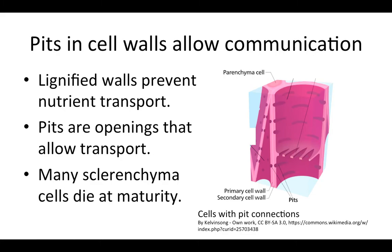There's a problem with sclerenchyma cells: they have these thick secondary cell walls, which is great for strength, but it also makes it very hard to transport materials from cell to cell. Transporting materials is important for allowing cells to survive and develop, because the developing cell needs to acquire materials and has waste products to get rid of. What we see in this picture of a related cell type is that there are pits or openings between the cells that connect and allow movement from cell to cell. Eventually, many sclerenchyma cells are going to die, because the primary purpose of sclerenchyma is structural support, and for structural support it doesn't really matter whether there's living material inside — what mostly matters is that the secondary cell walls are present.